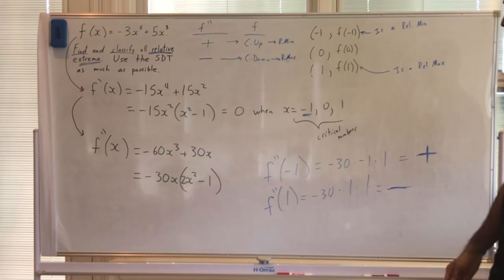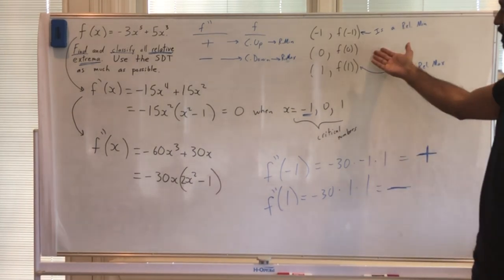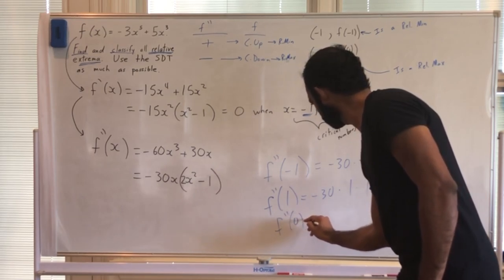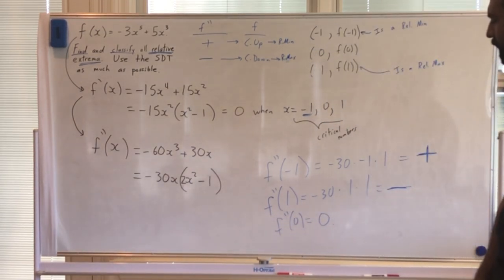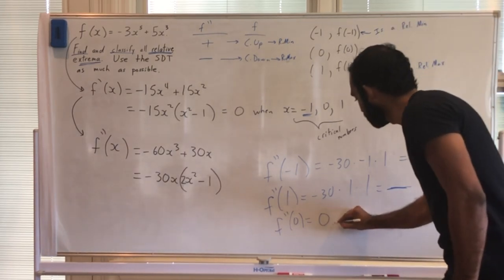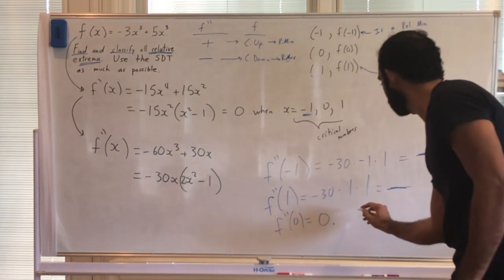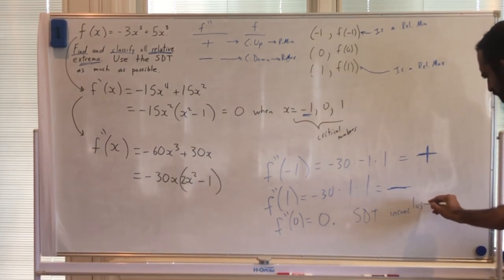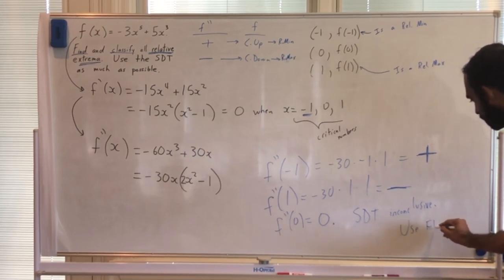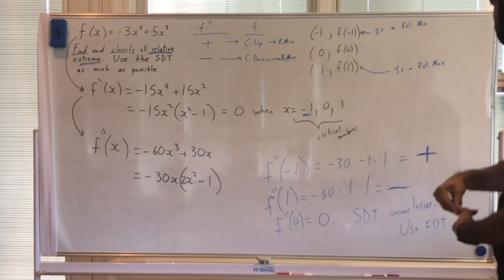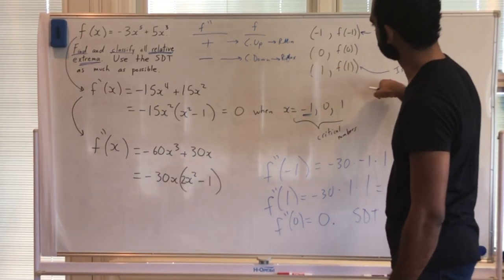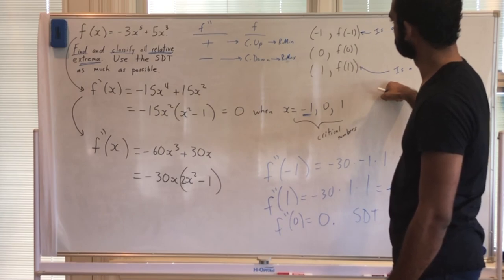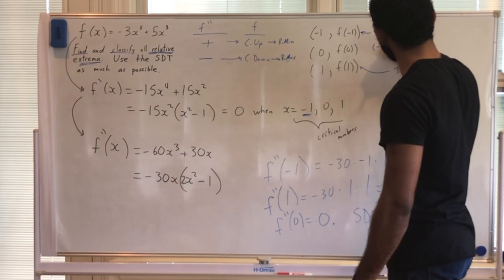Unfortunately, sometimes the test doesn't give us anything definitive. What is f double prime of zero? Looking at the factored form, that's just going to be zero. If the second derivative is zero, the SDT fails — it's inconclusive. So we're going to need to use the first derivative test on that one. Let's quickly do our FDT, testing the intervals negative one to zero and zero to positive one.